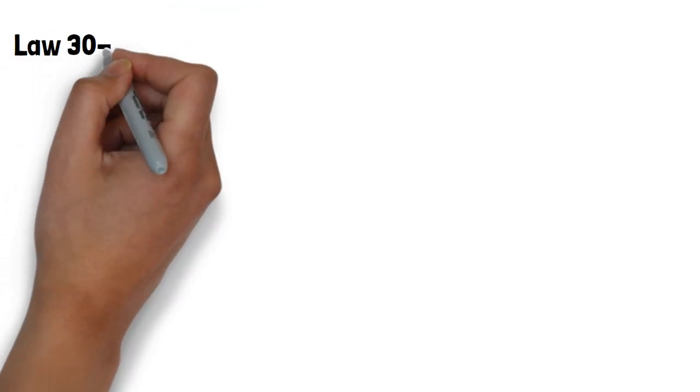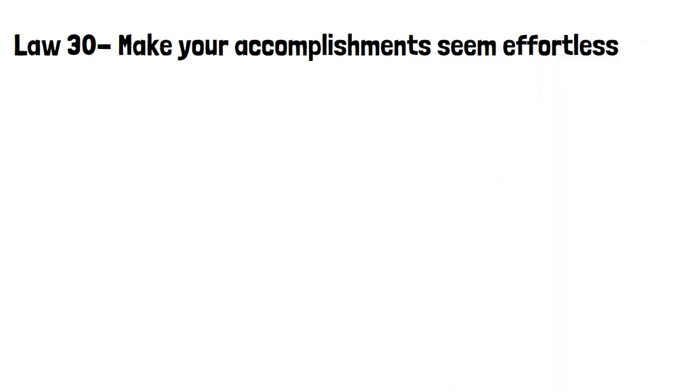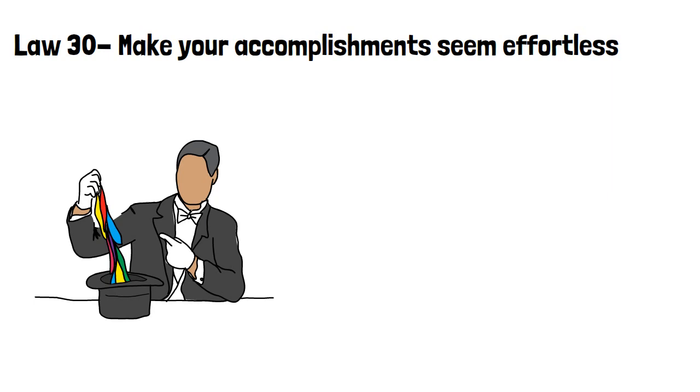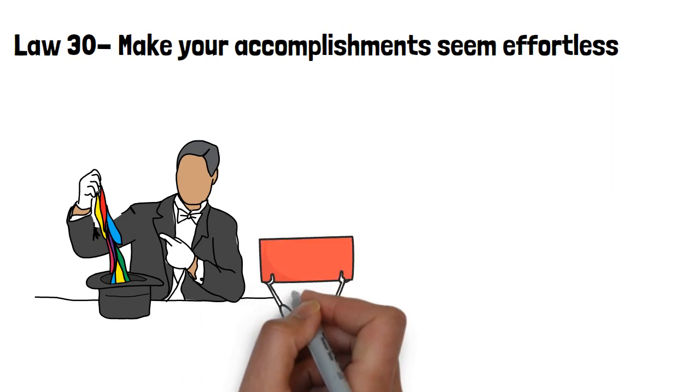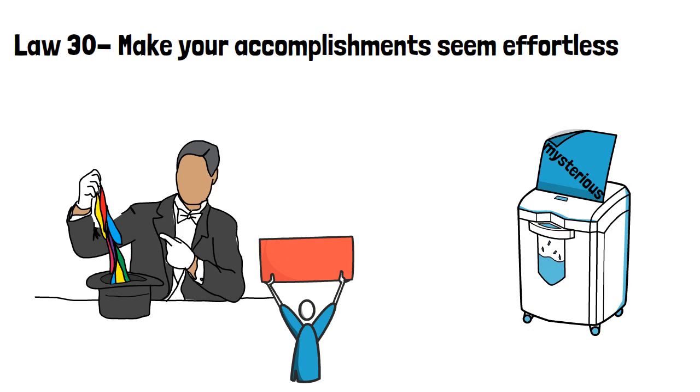Law 30, make your accomplishments seem effortless. Make your success appear easy. Hide all the hard work and tricks you use to achieve it, as it otherwise arouses too much curiosity in others. Do not reveal how you reached your position of power to anyone, or they may use it against you. The more mysterious your actions appear, the greater your power appears to be.